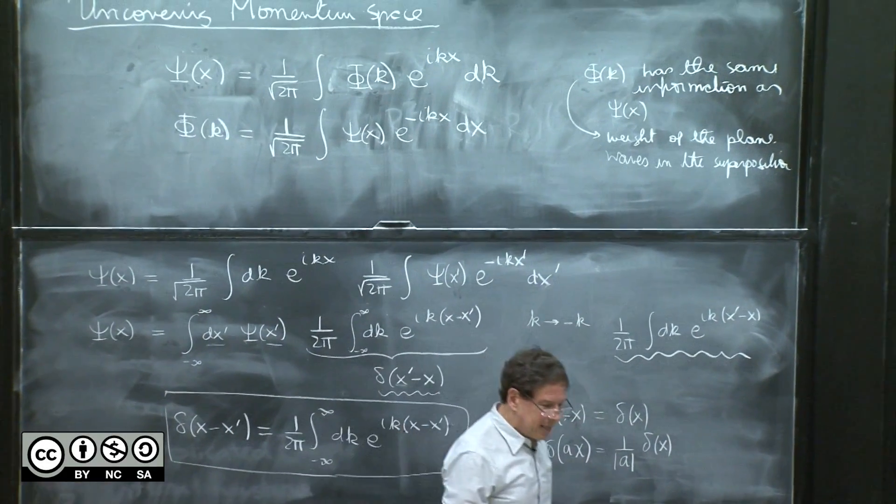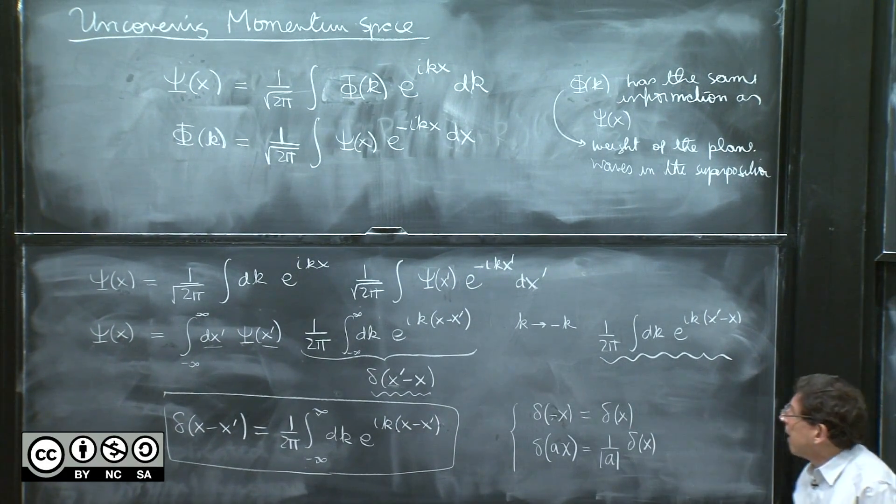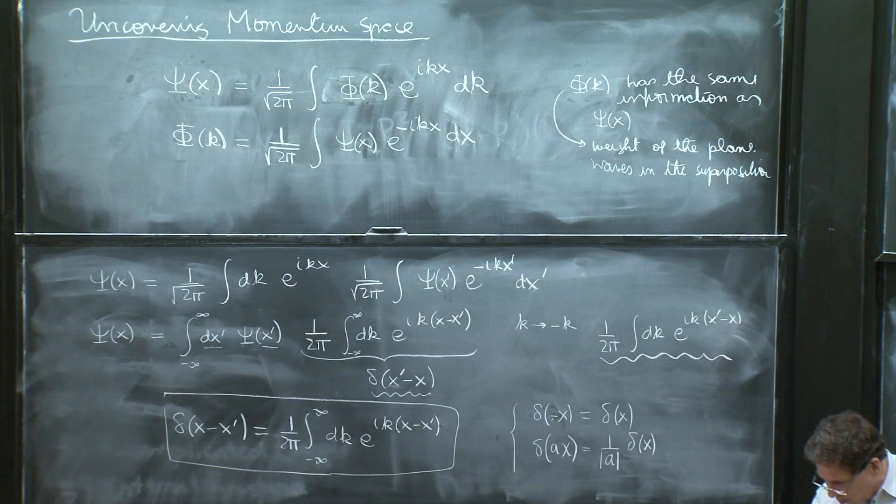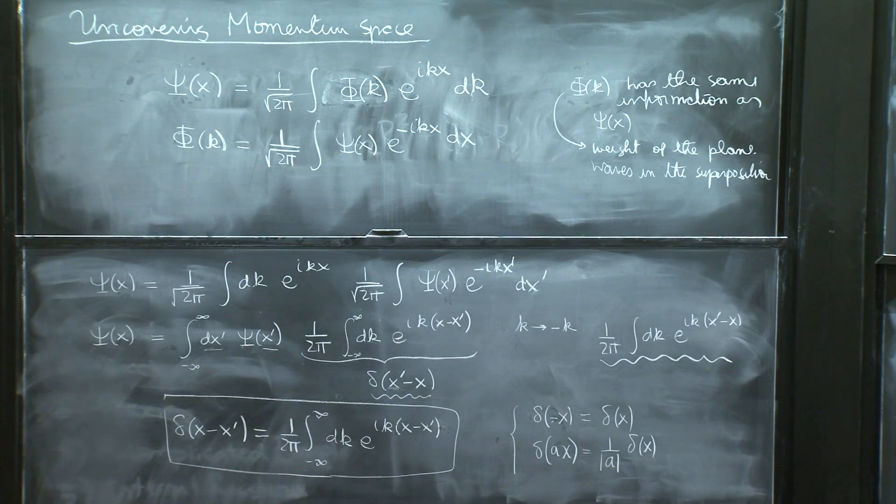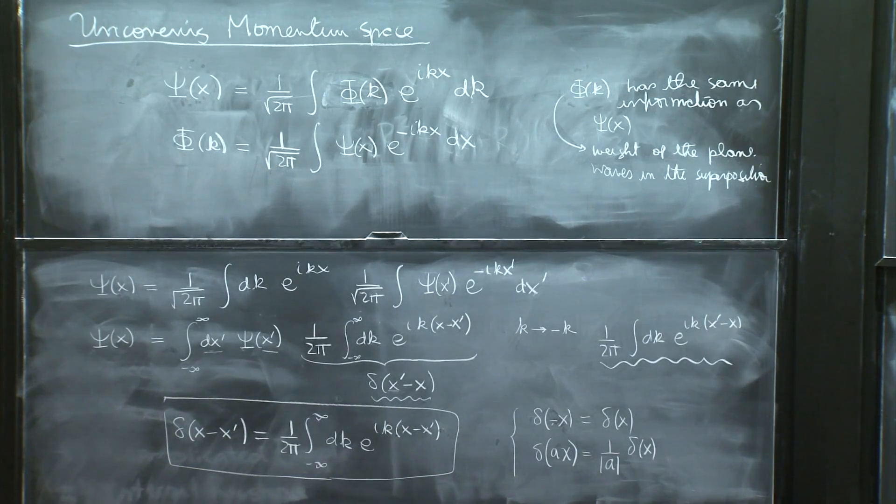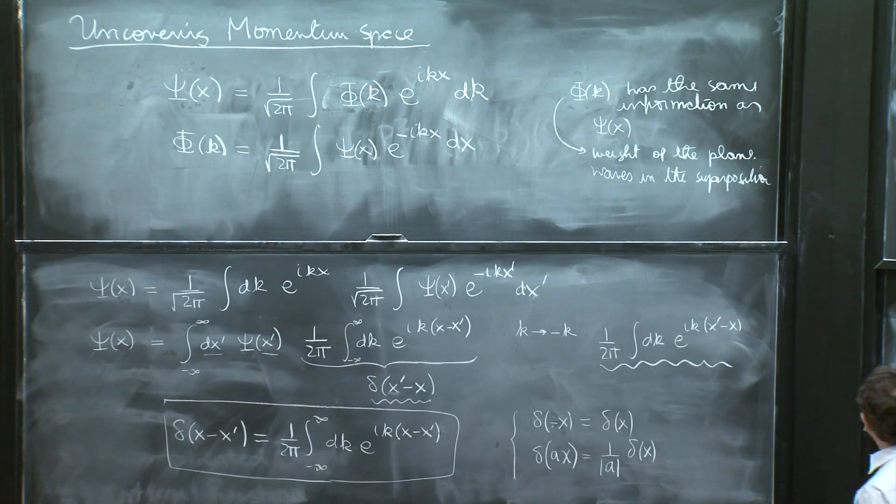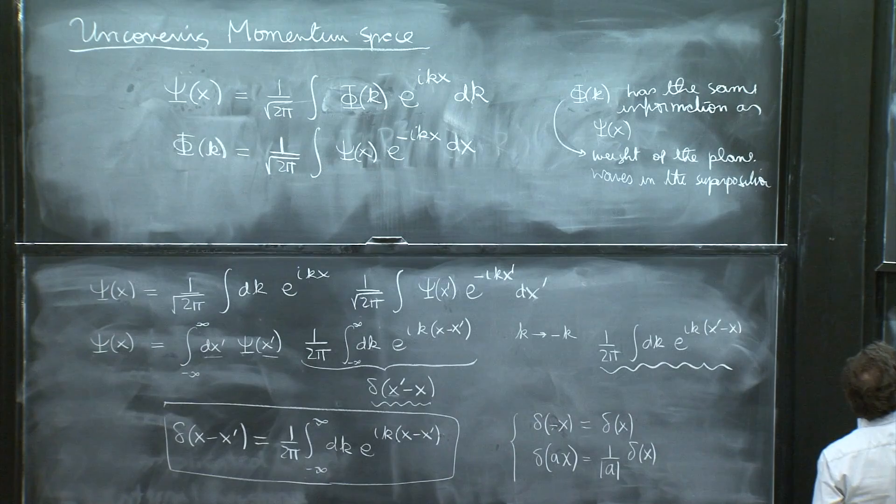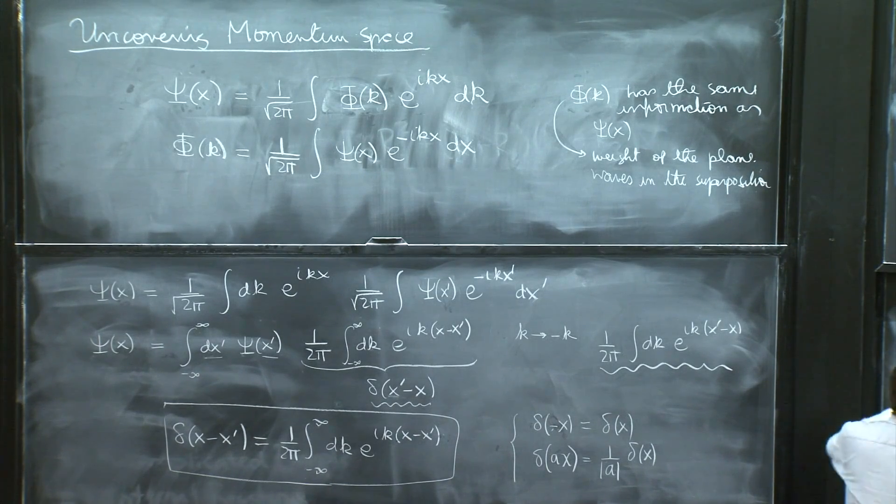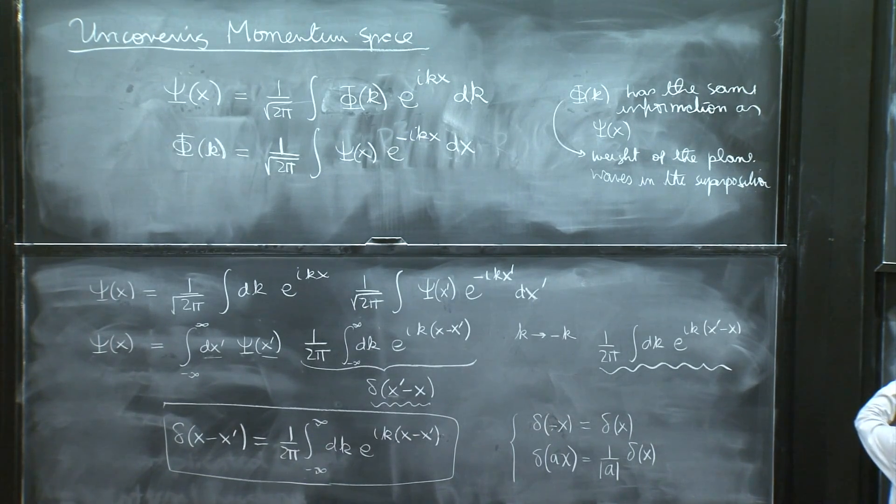What we want to understand now is really about momentum space. So we can ask the following question: What happens to the normalization condition that we have for the wave function when we think in momentum variables?